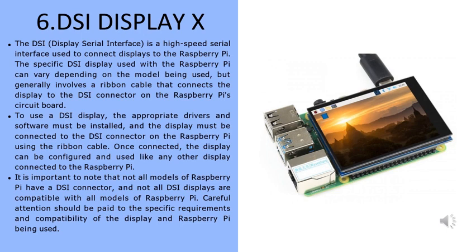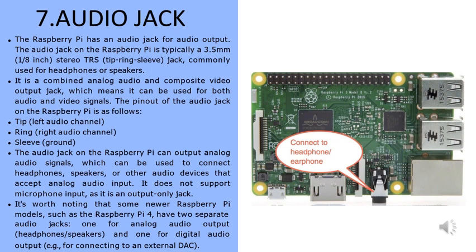Once connected, the display can be configured and used like any other display connected to the Raspberry Pi. It is important to note that not all models of Raspberry Pi have a DSI connector, and not all DSI displays are compatible with all models. Careful attention should be paid to the specific requirements and compatibility of the display being used. The seventh part is the audio jack. The Raspberry Pi has an audio jack for audio output.